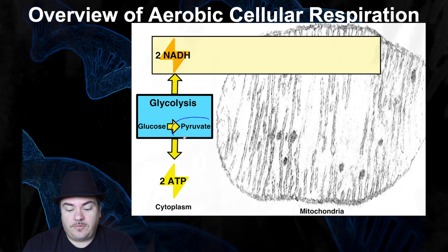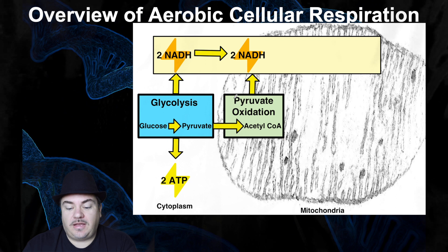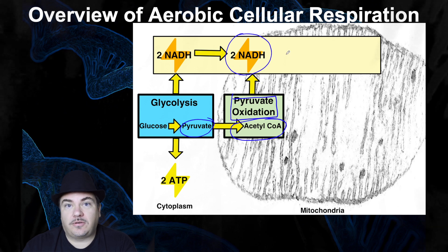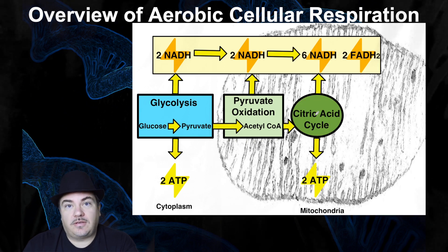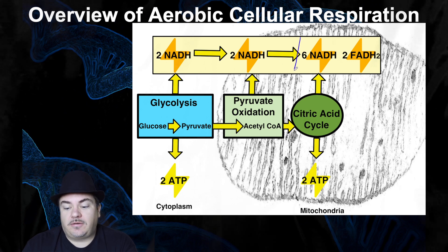You then take this pyruvate and bring it into the mitochondria. There you do the minor stage called pyruvate oxidation, which takes pyruvate and turns it into acetyl-CoA. Along the way, you also release carbon dioxide as waste and charge up two NADH electron carriers. Now that you have acetyl-CoA, you feed it into the second main stage — the citric acid cycle, also called the Krebs cycle. The citric acid cycle completes the breakdown to carbon dioxide, releasing all of the energy. That energy is used to charge up six NADH, two FADH2s, and two ATPs.